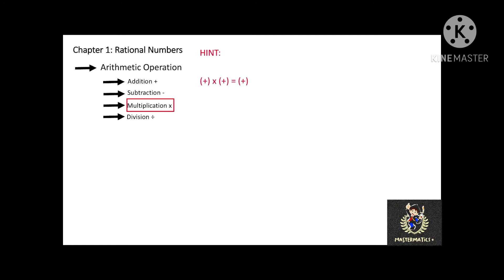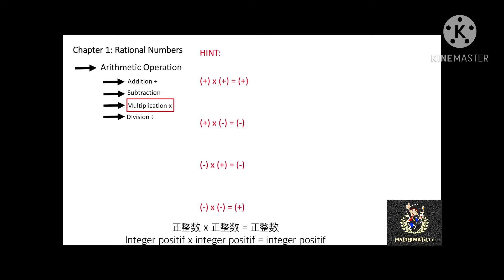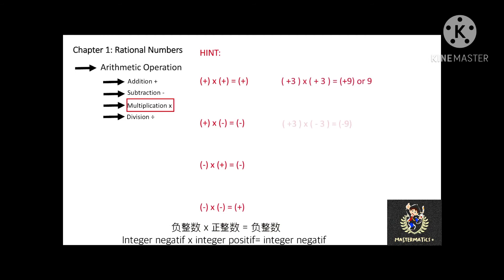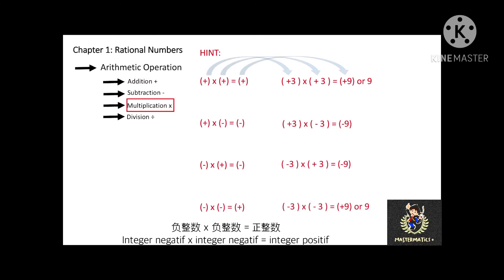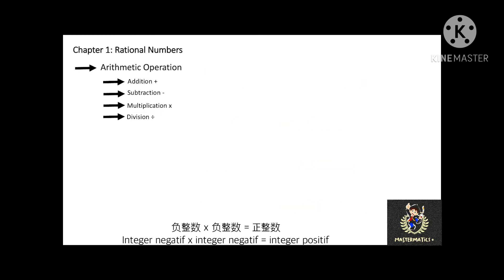Now, let's move to multiplication. The rules of multiplication must apply to perform the operation. Positive times positive equals positive. Positive times negative equals negative. Negative times positive equals negative. And negative times negative equals positive.